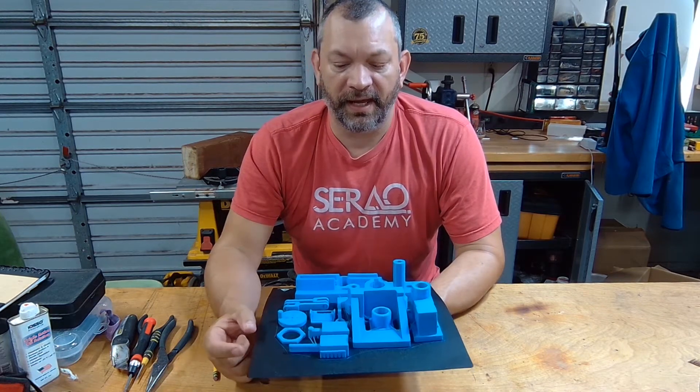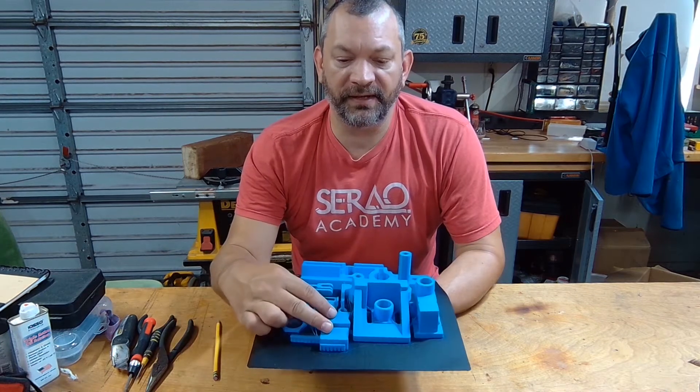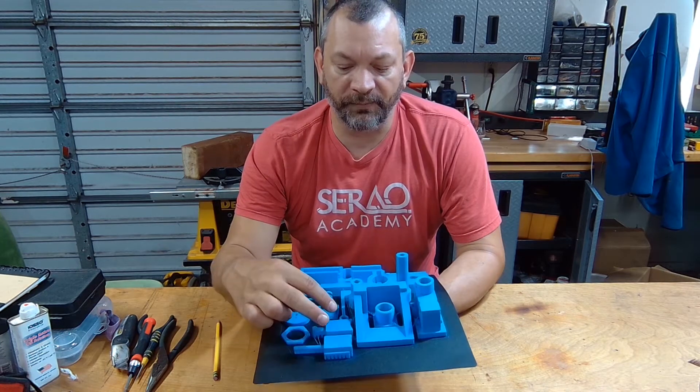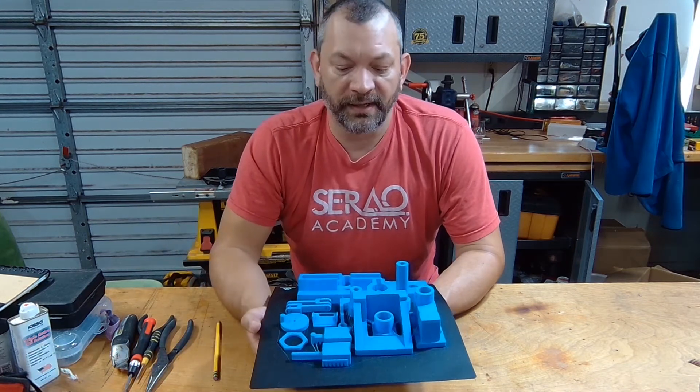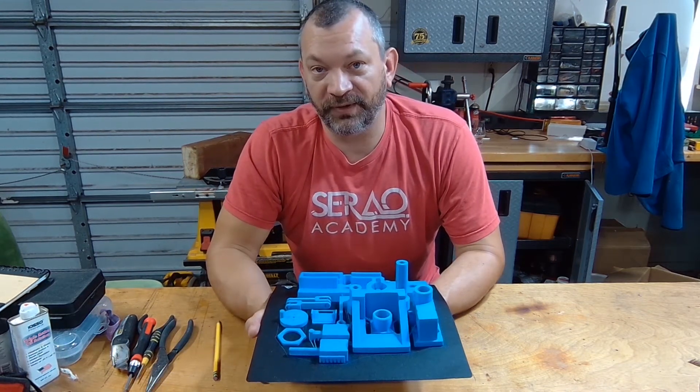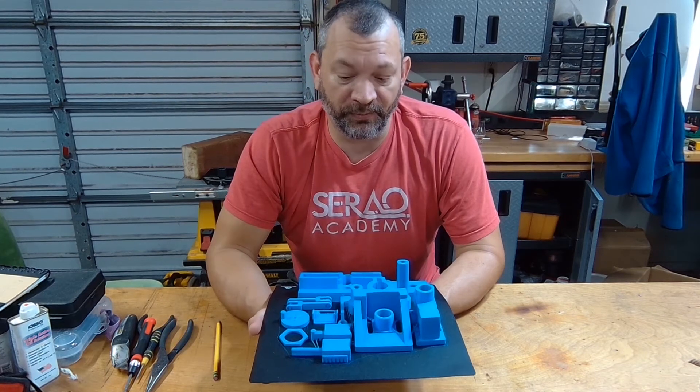I wouldn't recommend doing this whole machine in blue or any other color other than black. If you did choose to use a different color, these pieces here would need to be in black and probably the camera module. Everything else can be whatever color you like, but those will actually affect the image and affect the training. It's really optimized right now for black.